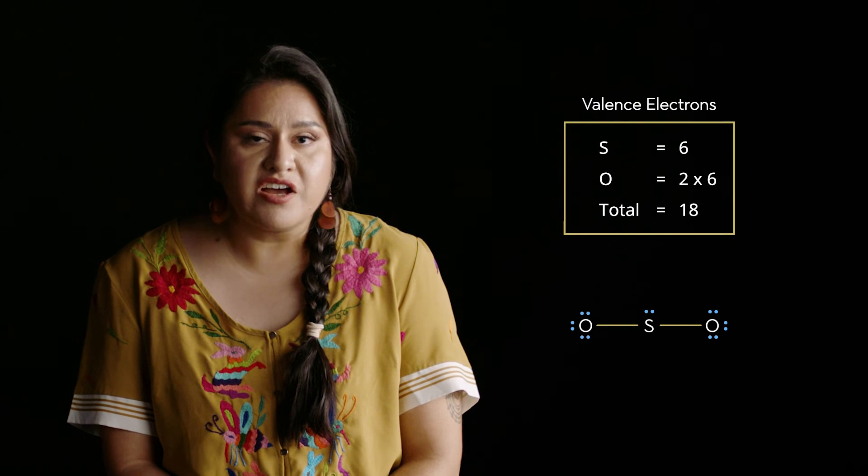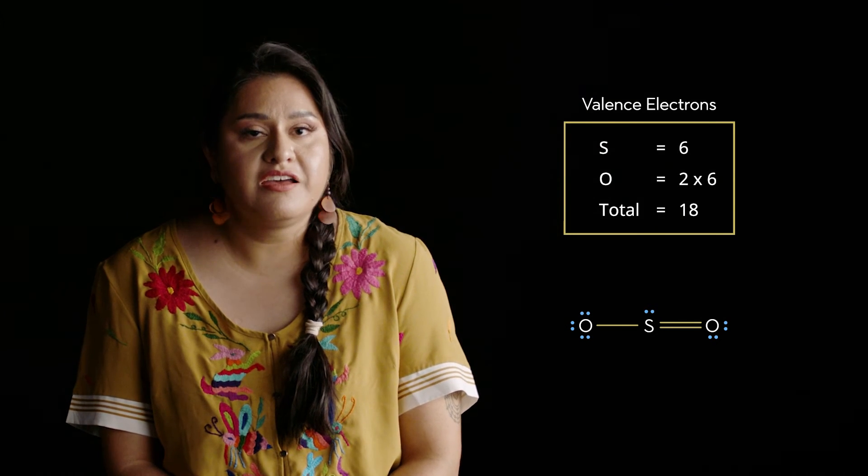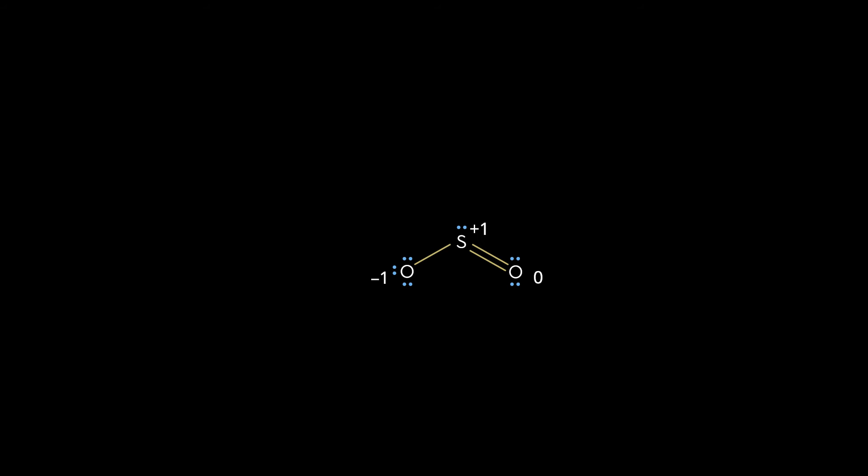The sulfur doesn't have an octet, so let's convert a lone pair on one of the oxygens to a bonding pair. But again, remember that sulfur is able to expand its octet. In this Lewis structure, the sulfur has a plus one formal charge, and oxygen has a negative one formal charge. We can reduce these both to zero by converting an oxygen lone pair to a bonding pair. Just like sulfur trioxide, the sulfur again has three electron domains, and the electron group geometry is trigonal planar. However, unlike sulfur trioxide, one of the electron domains is a lone pair, so the molecular shape of sulfur dioxide is bent.